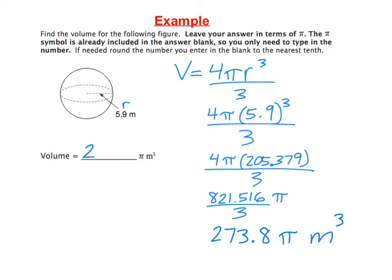So in our answer blank on Schoology, we would just need to type out the 273.8. The pi and the meter cubed are already part of the answer blank.